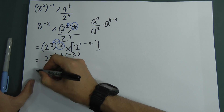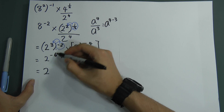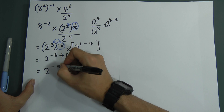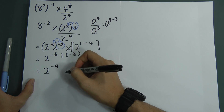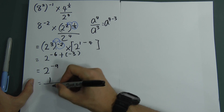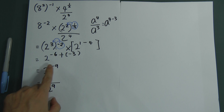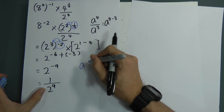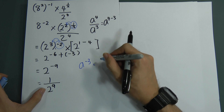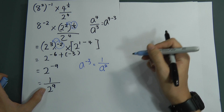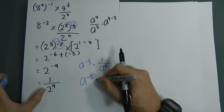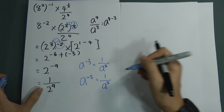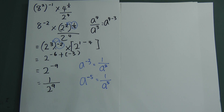So we get 2 to the power of negative 6 plus negative 3, which is negative 9. I think this is the answer. However, if you want to write it in fraction form, this becomes 1 over 2 to the power of 9. Whenever you see a negative power, it means 1 over. For example, a to the power of negative 3 means 1 over a to the power of 3. If you got a to the power of negative 5, that means 1 over a to the power of 5. I hope this example helps you understand better about indices. I will bring two more examples.